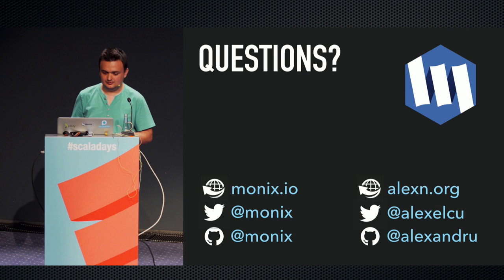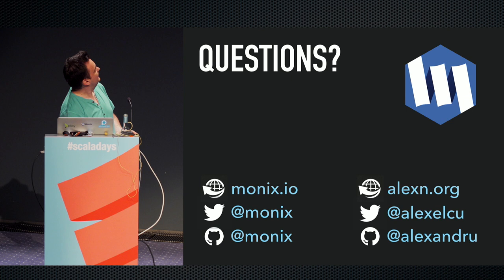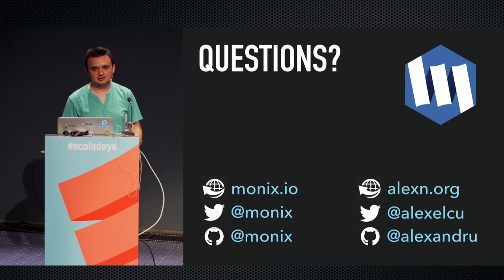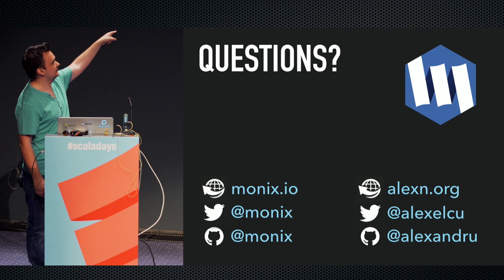That was it. Those are the links — the Monix website has documentation and API documentation. I tried to provide good API documentation. Task is really well documented; Observable not so much, but I hope to fix that. Twitter handles, GitHub handles — and that one is me. I rant a lot, sorry about that.